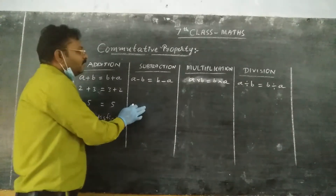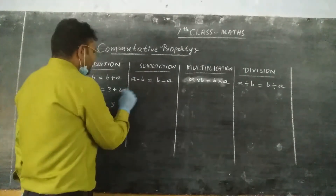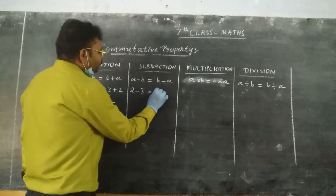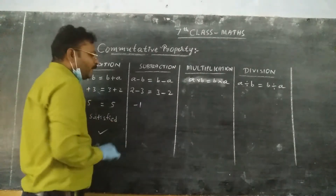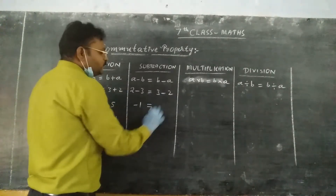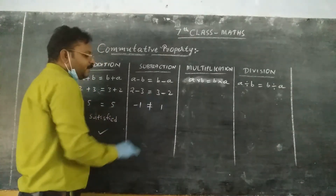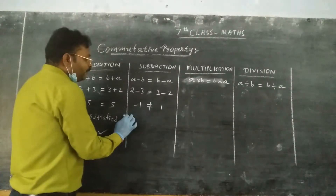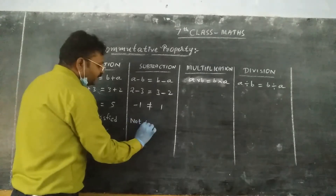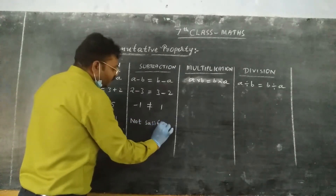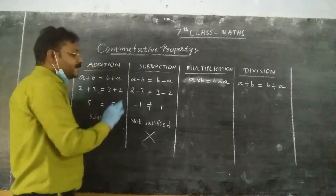Next I am going to check commutative property under subtraction. Taking the same numbers: 2 minus 3 equals minus 1, and 3 minus 2 equals plus 1. Minus 1 and plus 1 are not equal. So commutative property under subtraction is not satisfied.